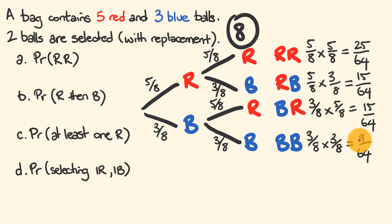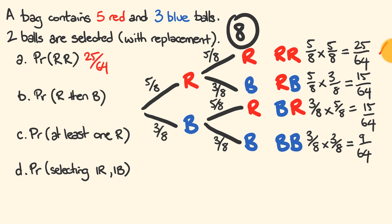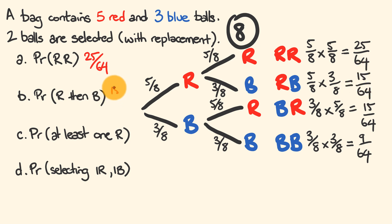Now let's answer the questions — it's easy because we've set everything up. The probability of getting a red then a red is 25/64. The probability of getting a red then a blue is 15/64.